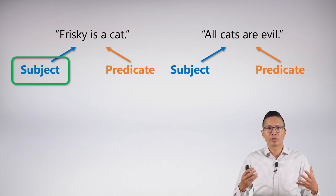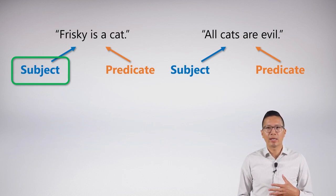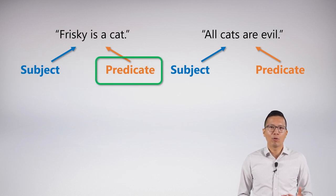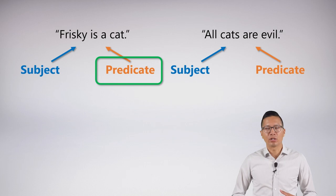When we look at 'Frisky is a cat,' we now understand how to represent Frisky. Frisky is a subject, which is a name. Now we need to shift over and start to make sense of how we can symbolize predicates.